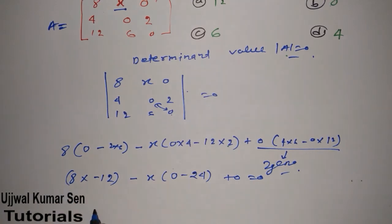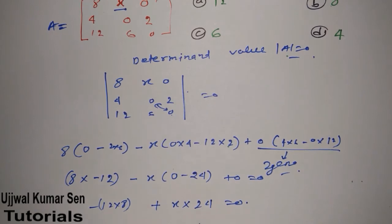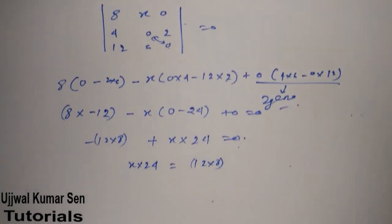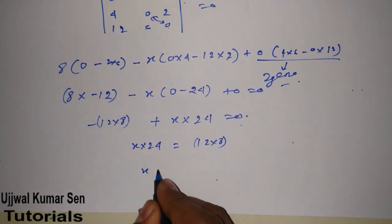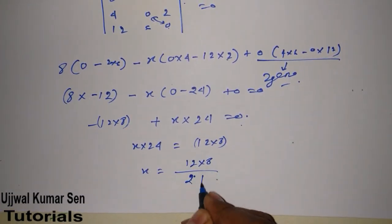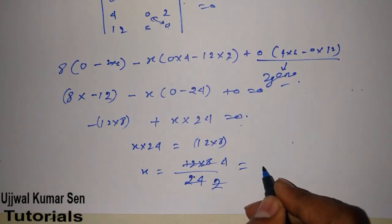So minus 12 into x, 0 minus 24 plus 0 is equal to 0. So minus 12 times 8 plus x multiplied by 24 is equal to 0. So x multiplied by 24 is equal to 12 multiplied by 8. If we send this to this side, minus becomes plus. Now x is equal to 12 multiplied by 8 divided by 24.